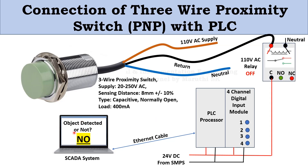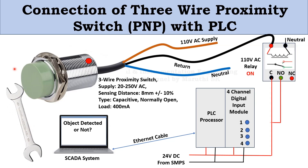Currently, no object is detected nearby the proximity switch, so the SCADA screen and PLC indicate 'Object Detected: No.' Now we bring the object near the proximity switch — the proximity switch detects the object and gives the indication lamp. 110V DC is applied to the proximity switch and returned through the black wire to the 110V DC relay coil. The relay turns on, NO contact changes to NC, and 24V DC passes through NC contact to channel number 1 of the digital input model. The PLC processor sends signal to the SCADA — Object Detected: Yes.